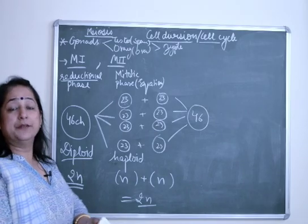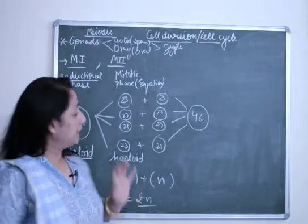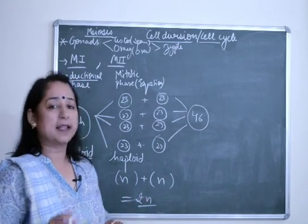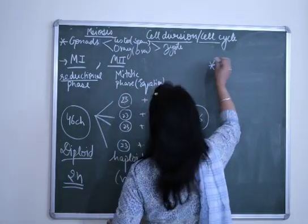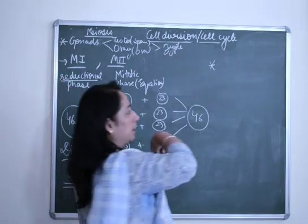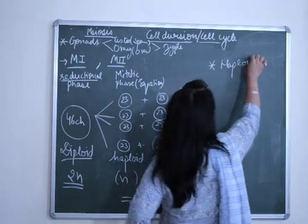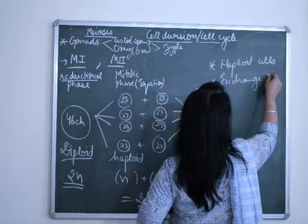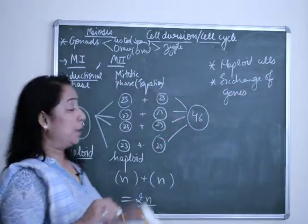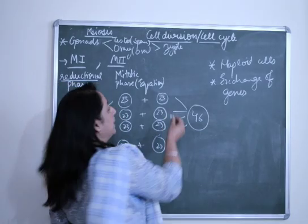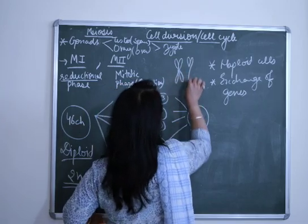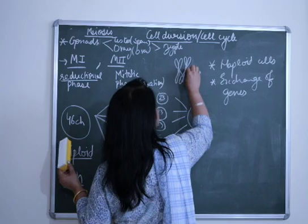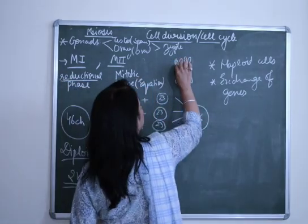This is the importance or significance of meiosis in the body. Meiosis has certain different traits or characters apart from mitosis. First, during meiosis half the number of chromosomes are produced, so haploid cells are produced. Second, exchange or intermixing of genes takes place during meiosis. During meiosis 1, if this is a chromosome from the father and this is a chromosome from the mother, the process of crossing over takes place.